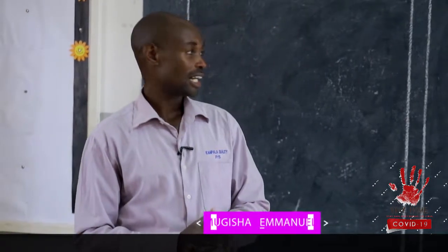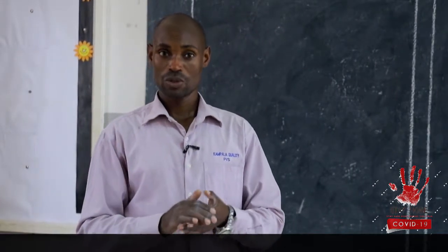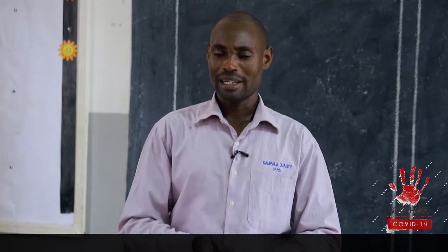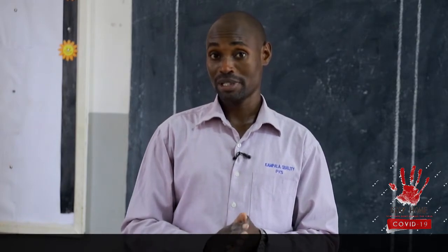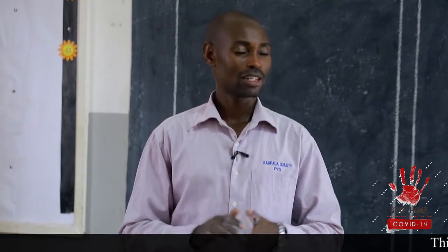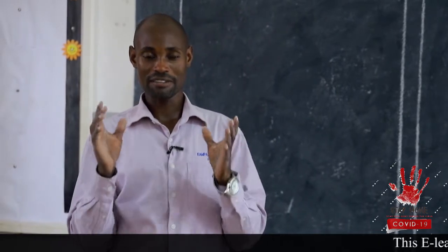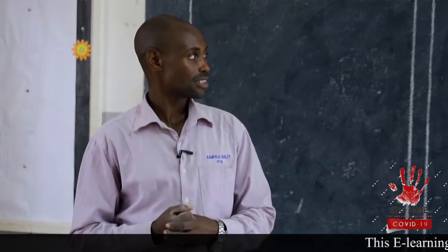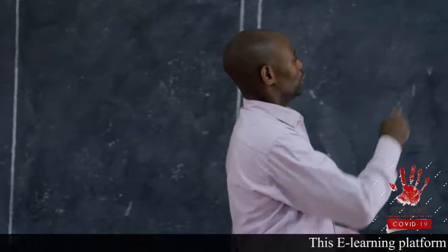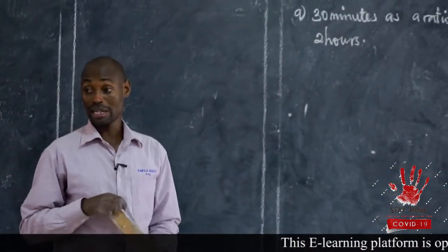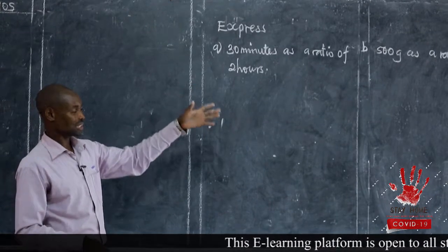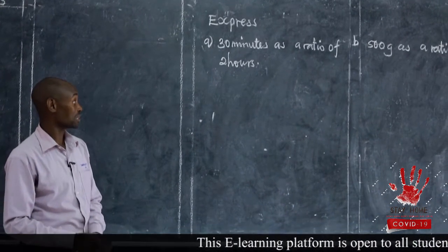In our previous lesson, I taught you how to express quantities into a ratio. These quantities can be given in different units, but the most important thing is: when you have been given different units, convert them. Have them in the same units, then you can go ahead and express them as ratios. We have an exercise I gave you — I've picked a few as a reminder of what we did.